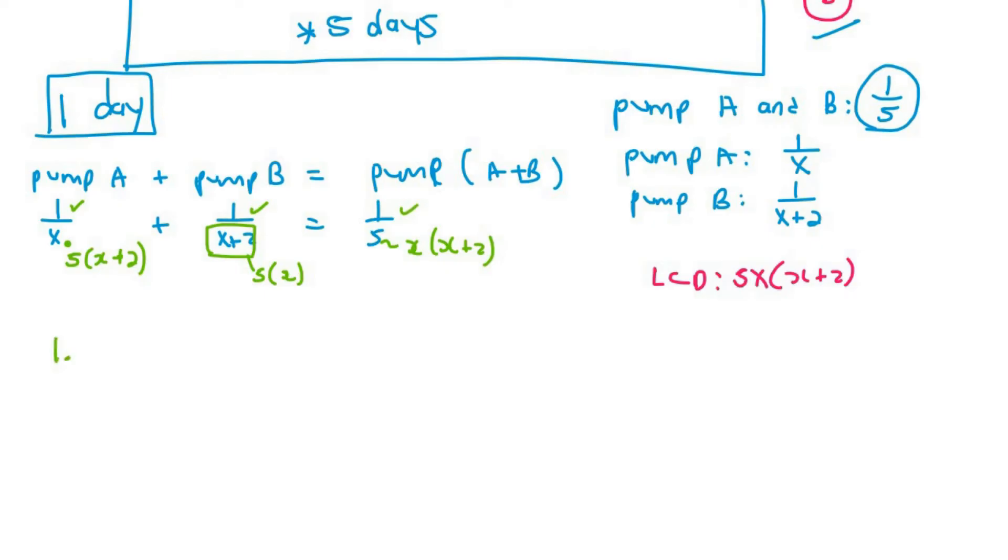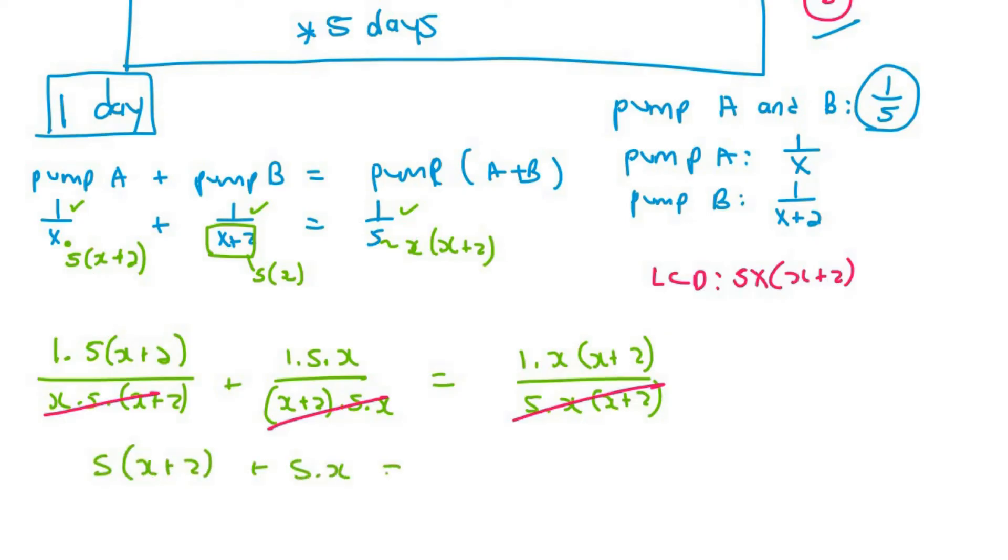So we're going to end up with one multiplied by five, multiplied by X plus two over X times five times X plus two, plus one times five times X over X plus two times five times X equals to one times X times X plus two over five times X times X plus two. Now that the common denominators are all the same, we can ignore them.